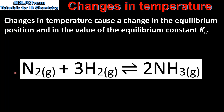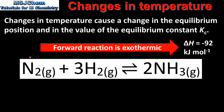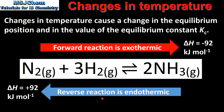Here we have the chemical equation for the Haber process. In the Haber process nitrogen and hydrogen react together to form ammonia. The forward reaction of the Haber process is exothermic, which can be seen by the negative value for the change in enthalpy. If the forward reaction is exothermic, the reverse reaction is endothermic, as seen by the positive sign of the enthalpy change.